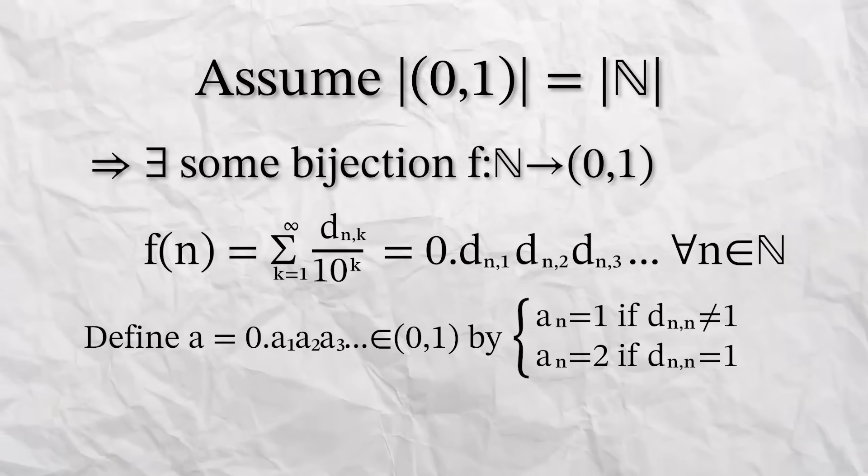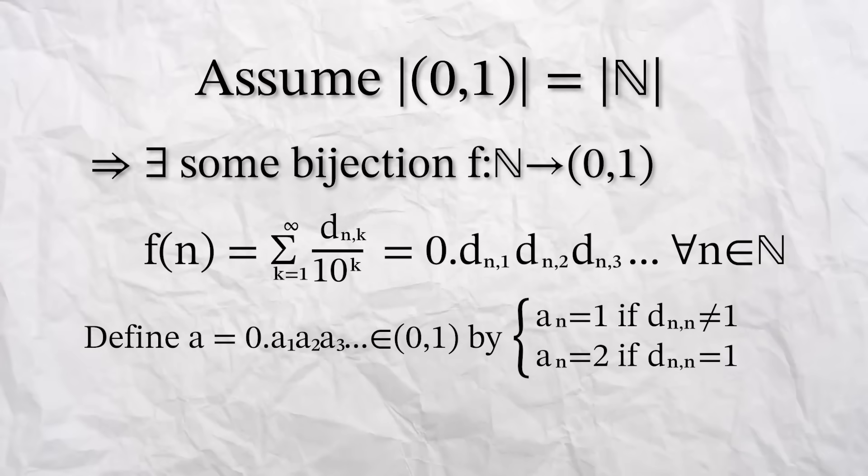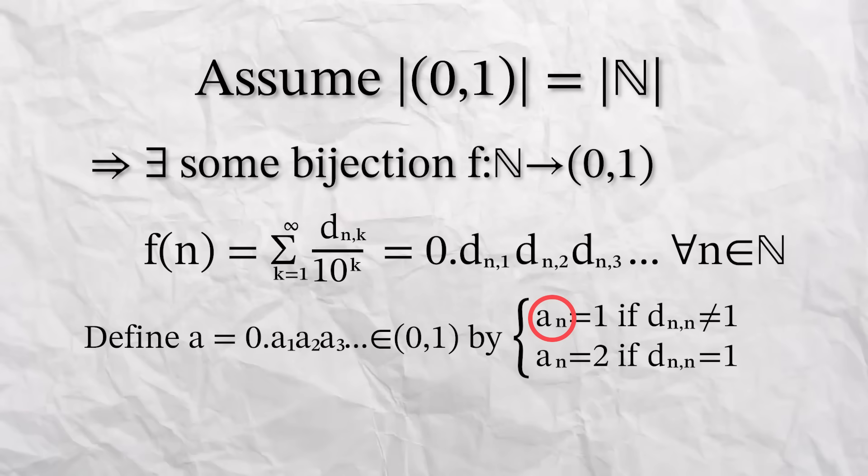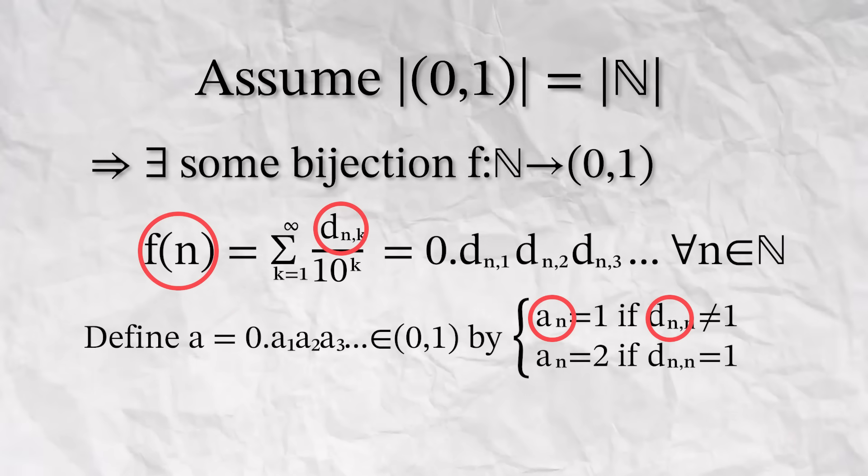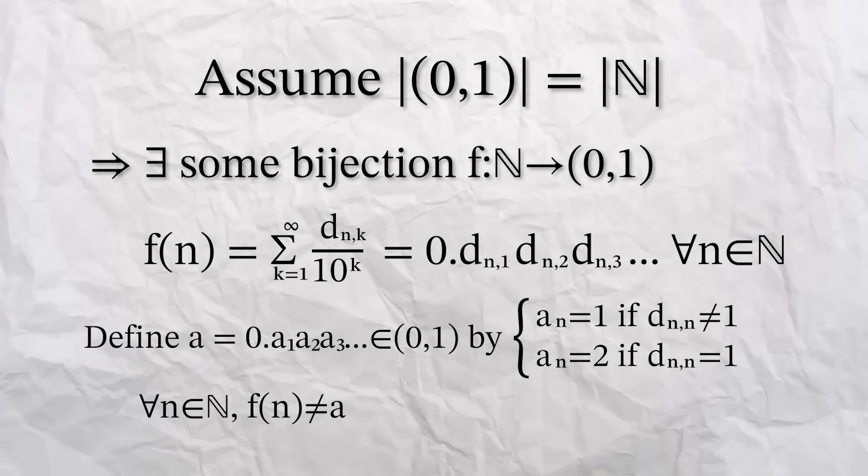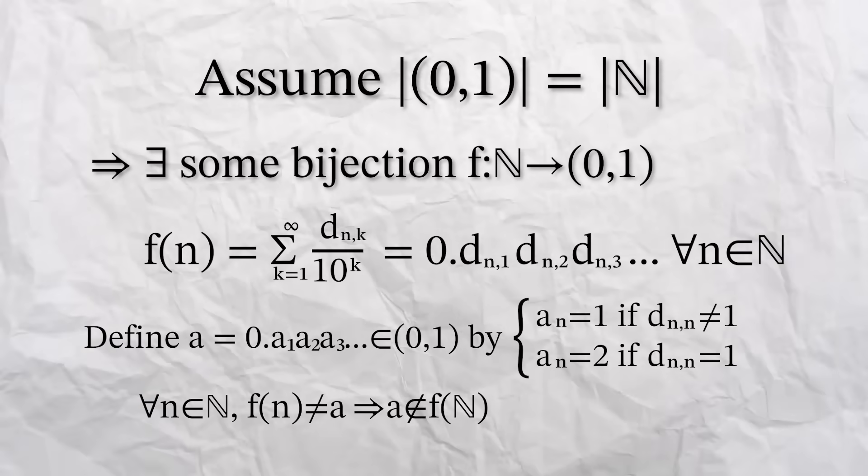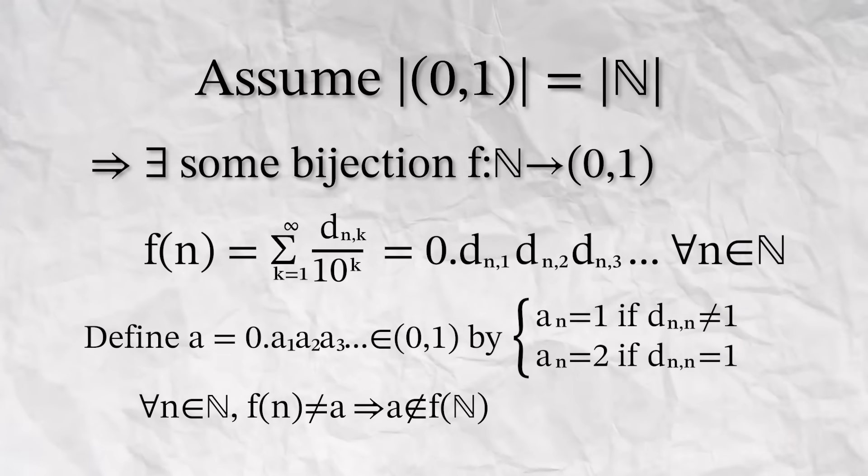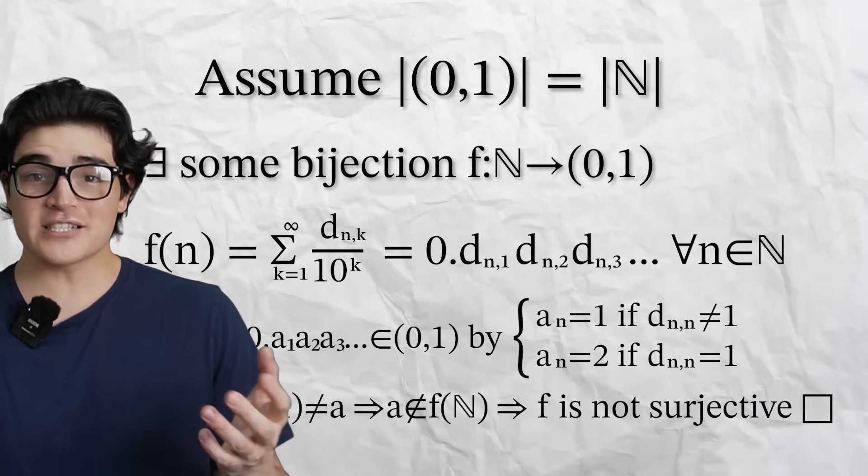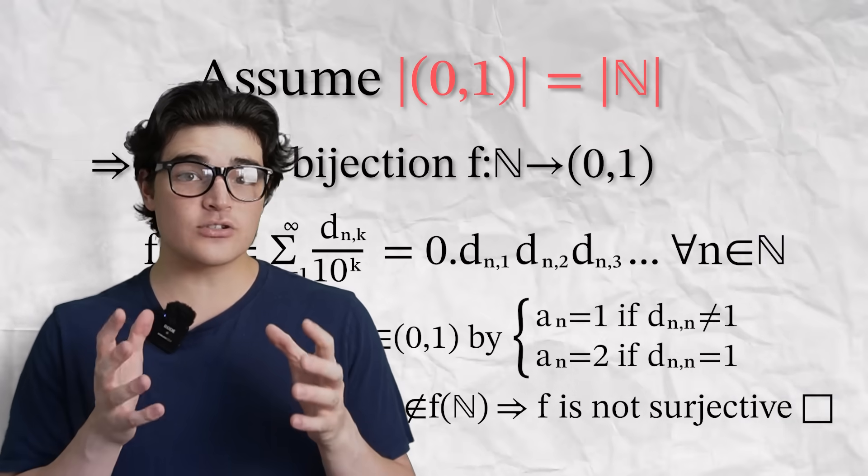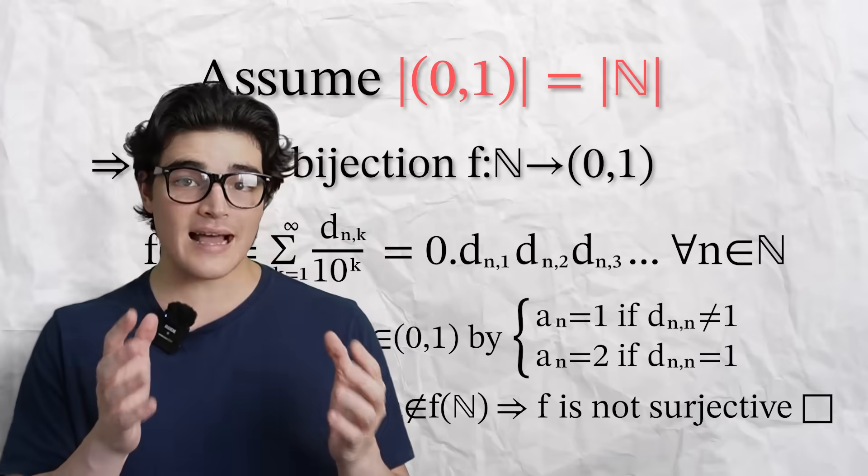We now define some A, such that AN is always different from DNN. This means that the nth digit of A will always be different from the nth digit of F of N. This means that for all natural numbers N, FN does not equal A, and hence A is not in the image of F, meaning F is not surjective. Thus we have a contradiction, and hence these two sets do not have the same cardinality. So now we can definitively say the cardinality of the real numbers is strictly larger than the cardinality of the natural numbers, but if I say any more, I could spark a bit of drama.